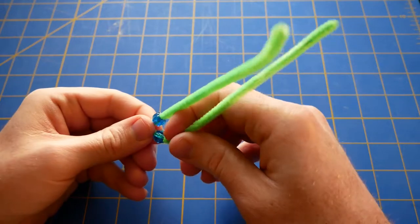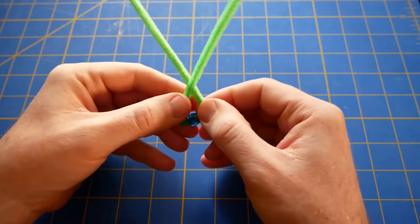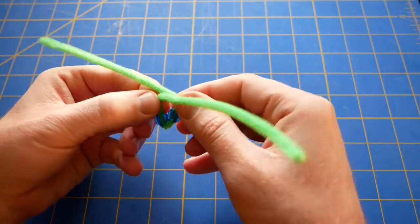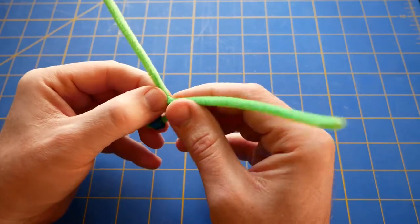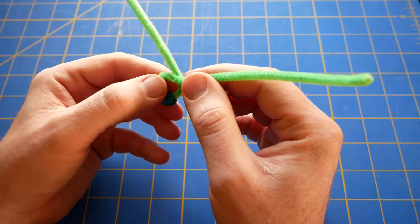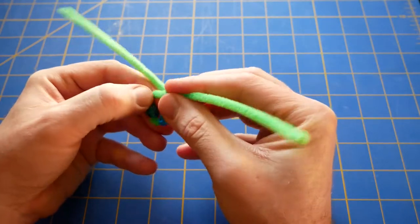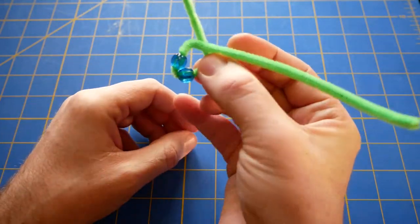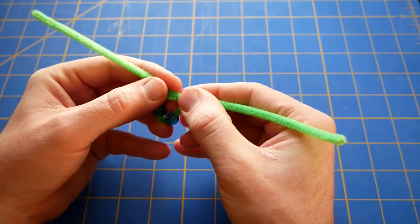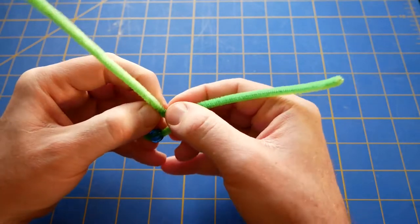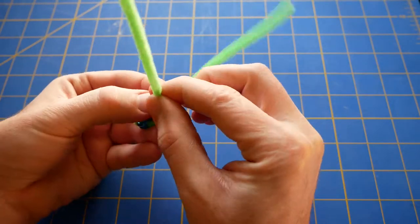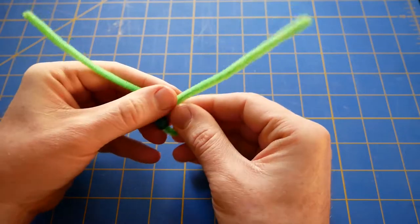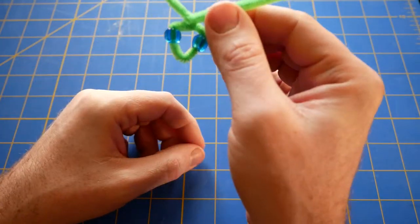Then you make two folds where you want the head to end, and you've got to make this pretty small because you're going to try and wrap all this with just one pipe cleaner. So the head should be like a triangle, basically. Then when you've got your triangle head, you take the two back strands and you twist them together.